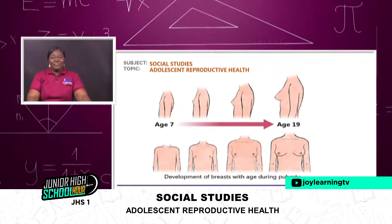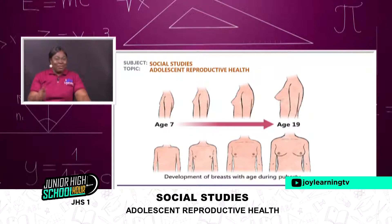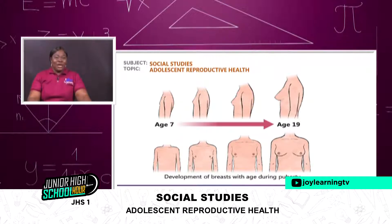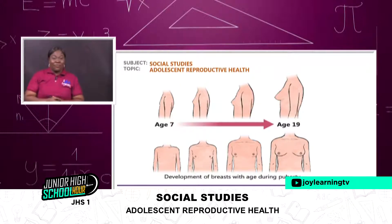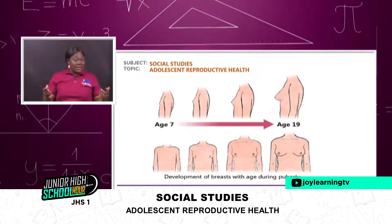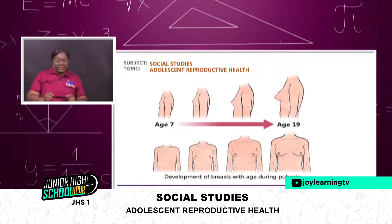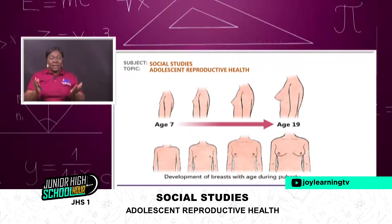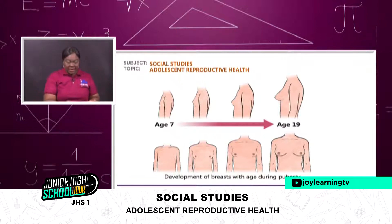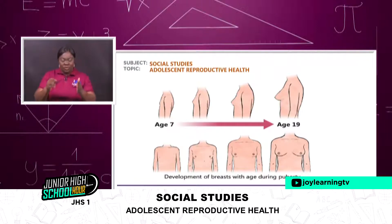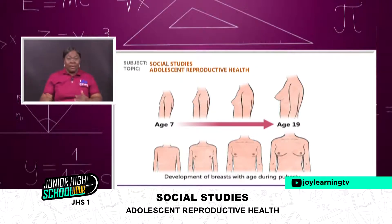There's another picture on your screen. I'll be giving you assignments on some of these pictures, so observe them very well so that when it's question time you'll be able to answer the questions I will project on your screen. You can see the development of breasts — the first one shows nothing, then as the person moves through the transition you see that the breast is sprouting out a little, a little, till 19 when the breast comes out fully.